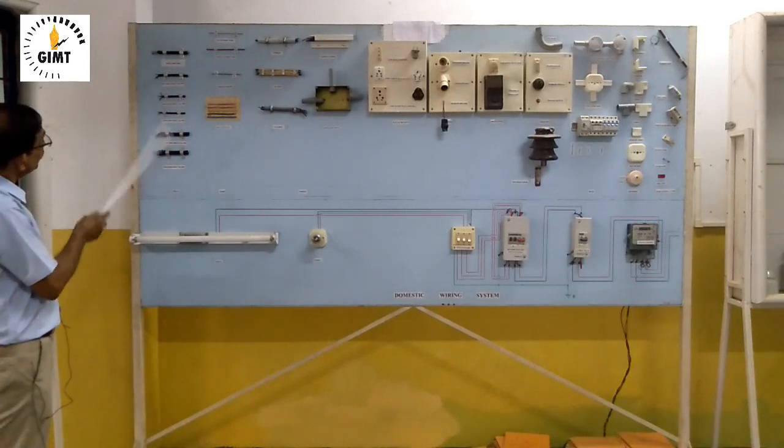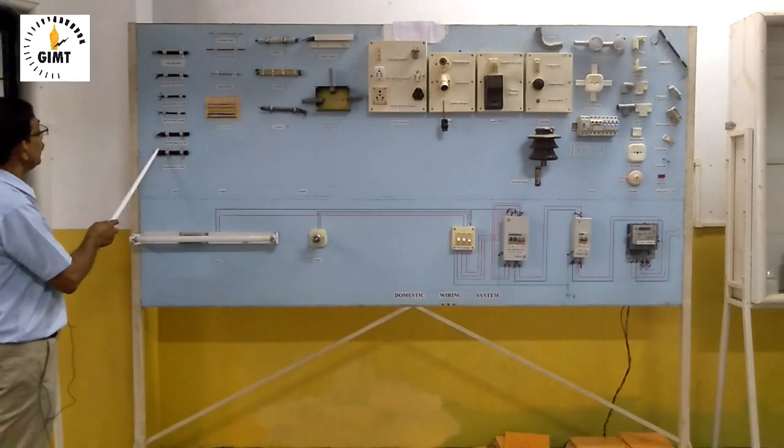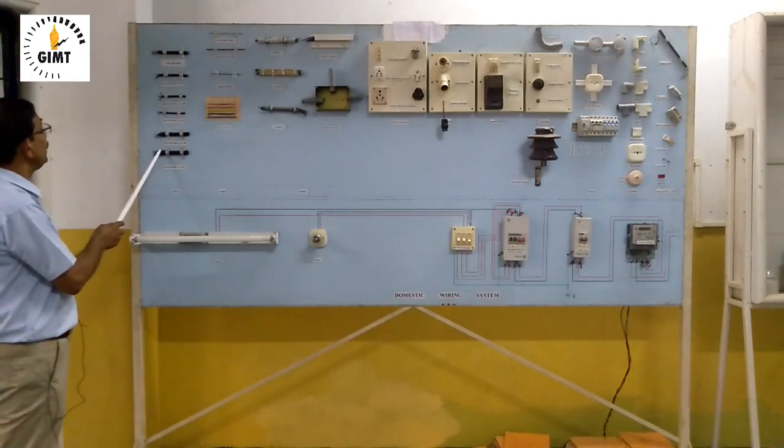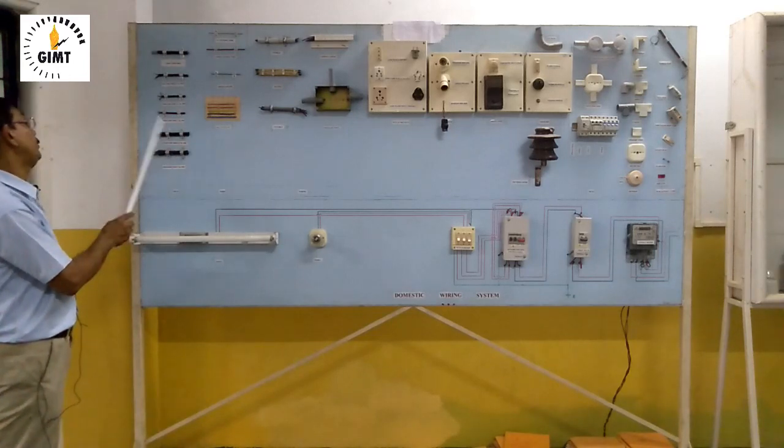And over that four-core, another one insulated material are there. So there are multi-layer and one layer of metallic wire or metallic strip will be there. So this is metal braided cable.